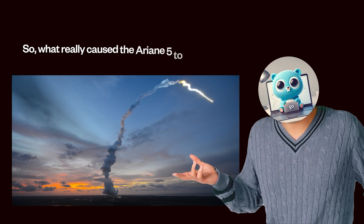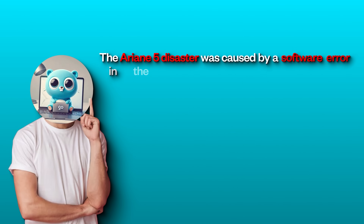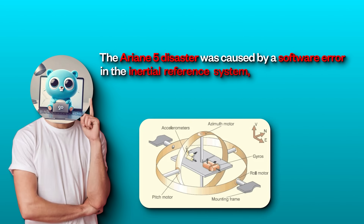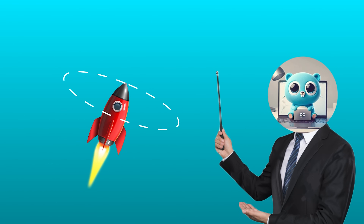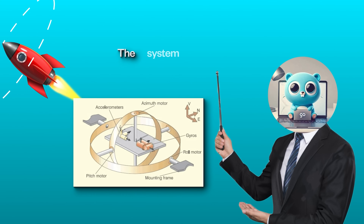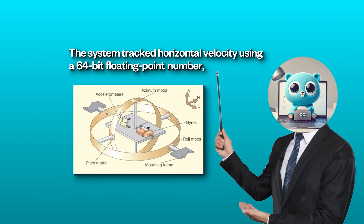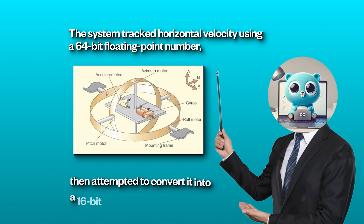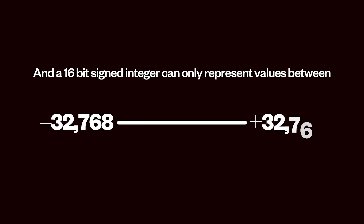So what really caused the Ariane 5 to fail so horribly? The Ariane 5 disaster was caused by a software error in the inertial reference system, which determines the rocket's orientation — whether it's pointing up, down, or off course. The system tracked horizontal velocity using a 64-bit floating point number, then attempted to convert it into a 16-bit signed integer. A 16-bit signed integer can only represent values between -32,768 and +32,767.